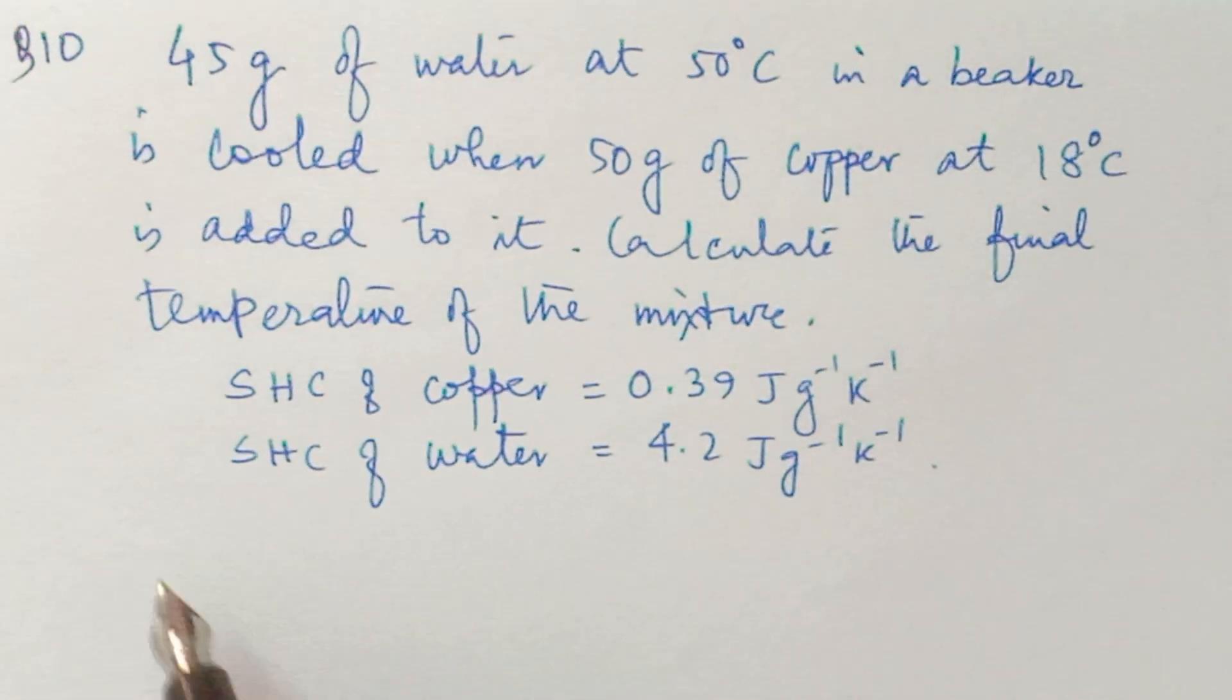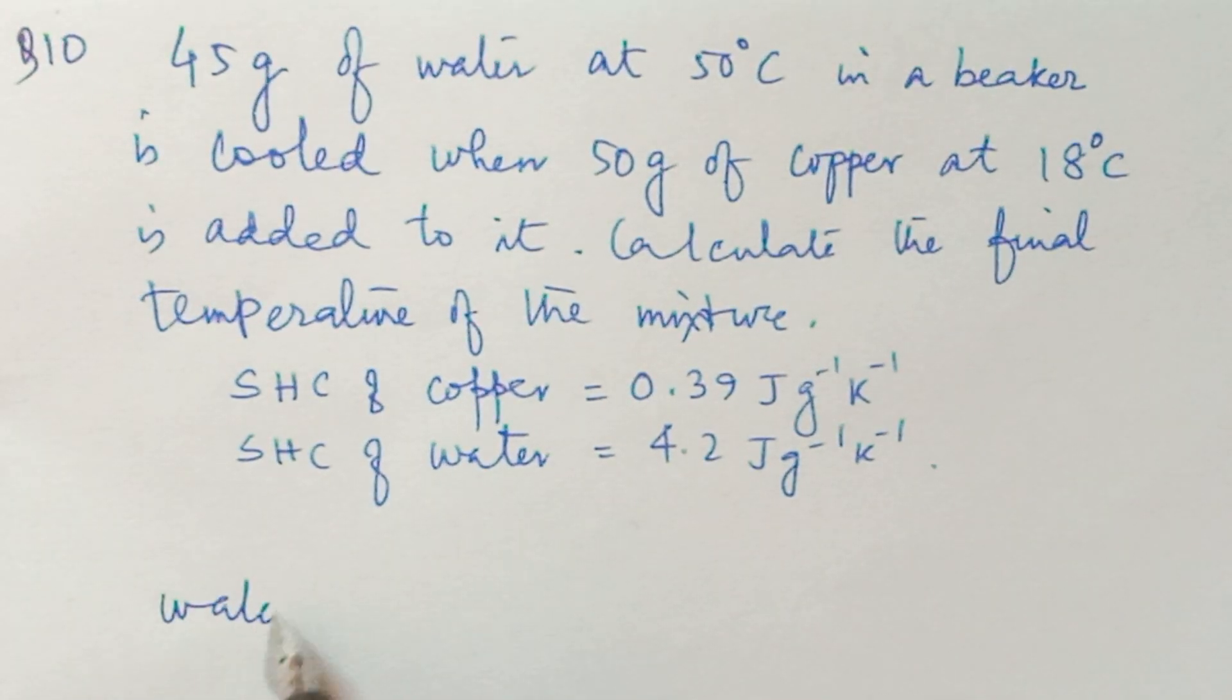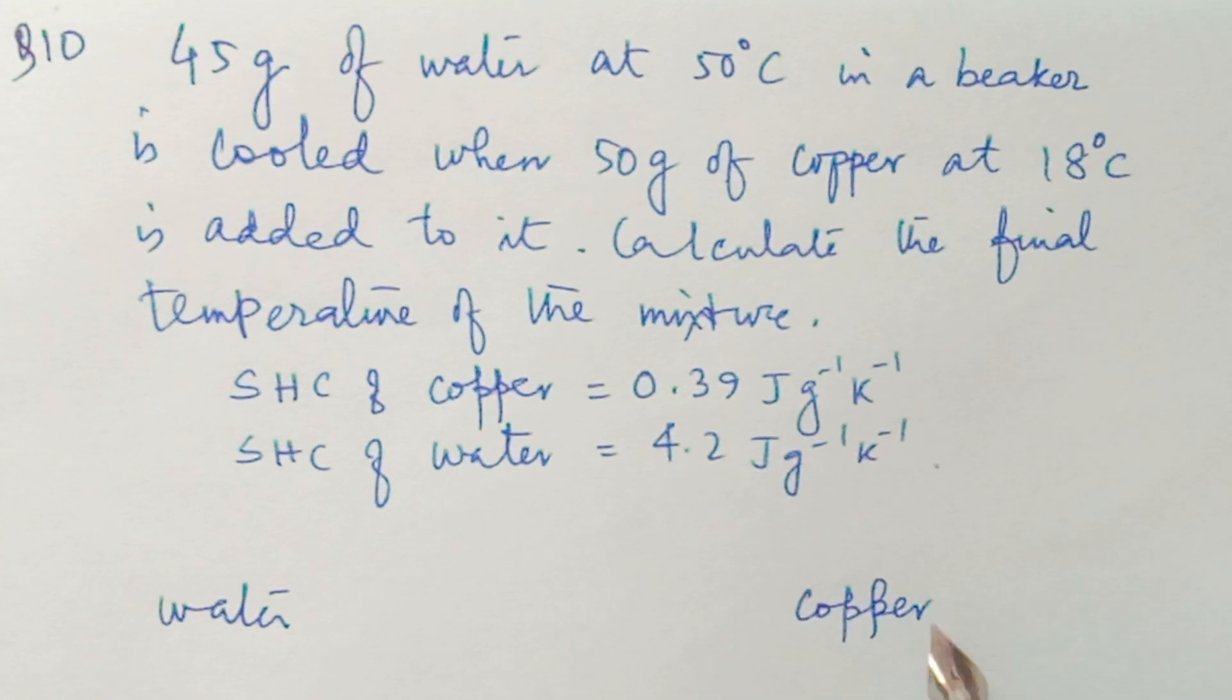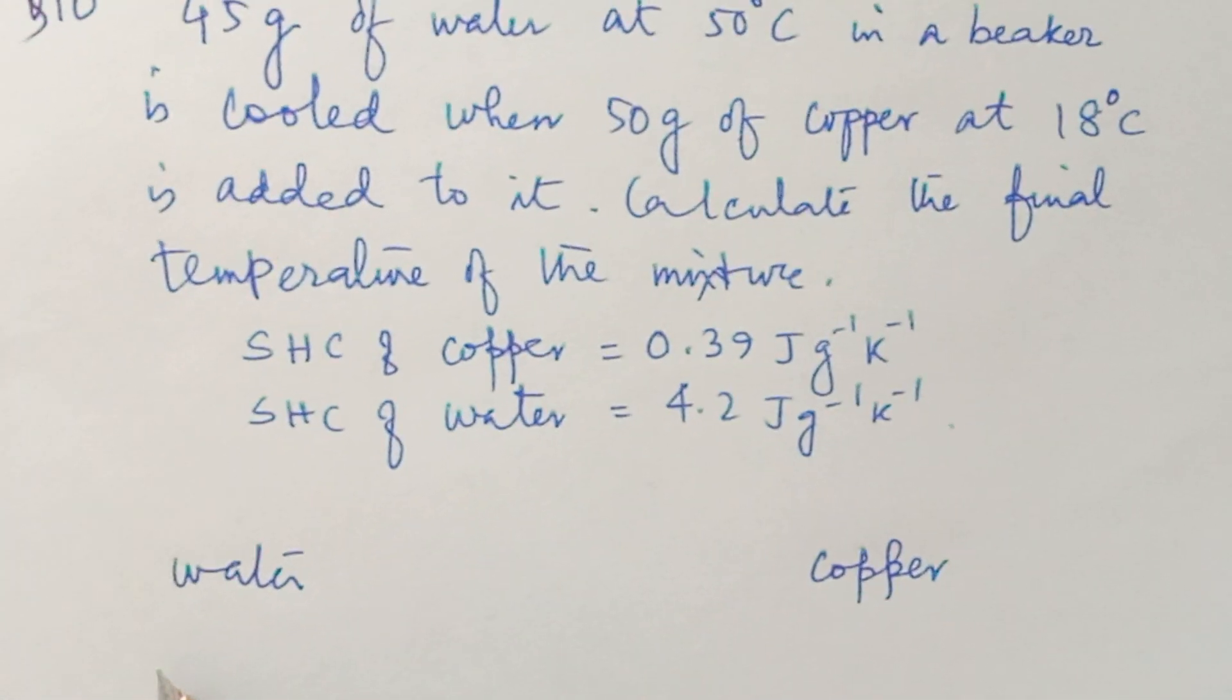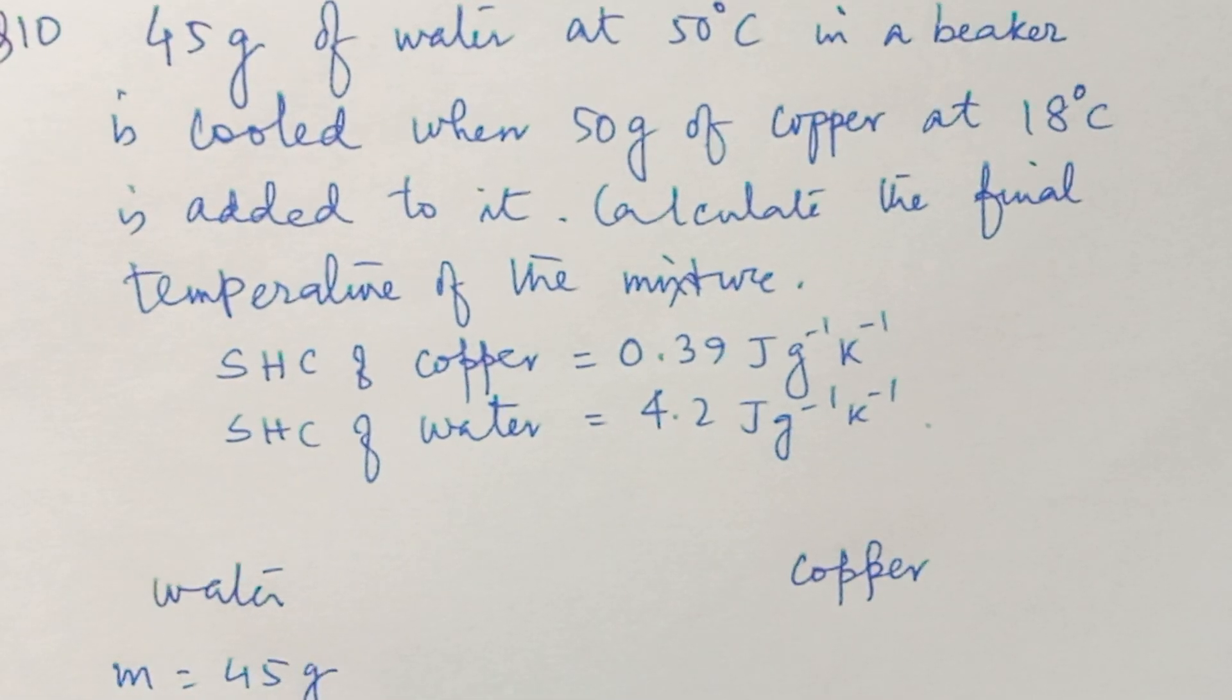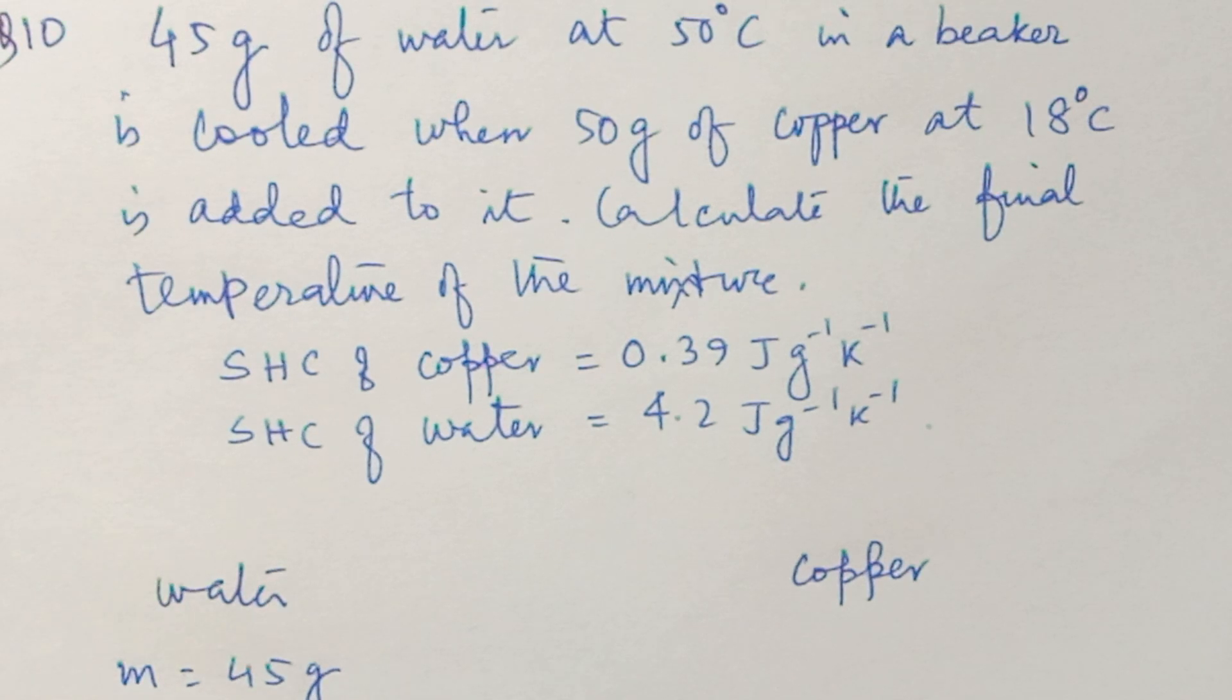Now, we can see two substances: water and copper. What is the mass of water? 45 gram. Temperature is given: 50 degree Celsius.